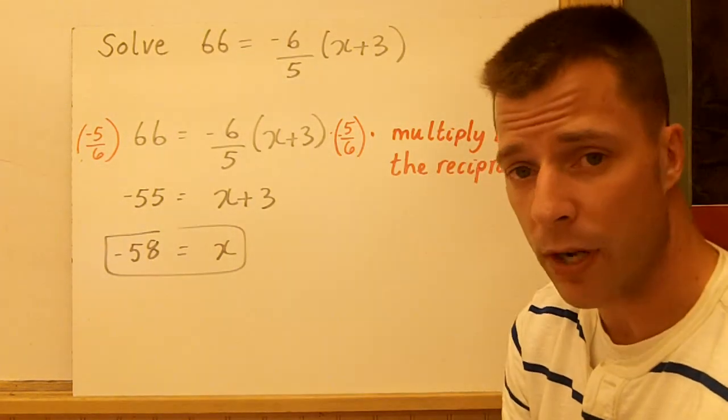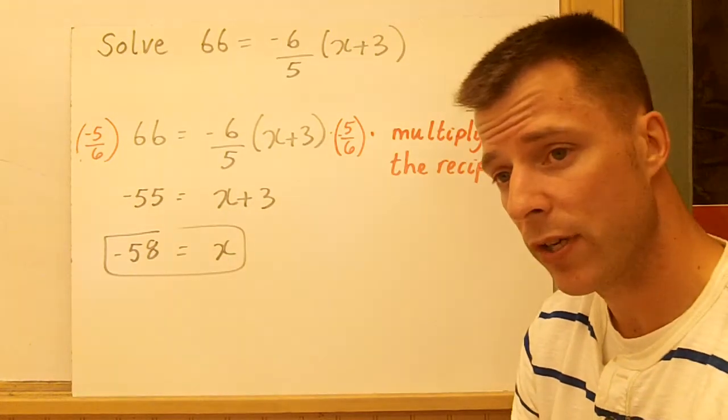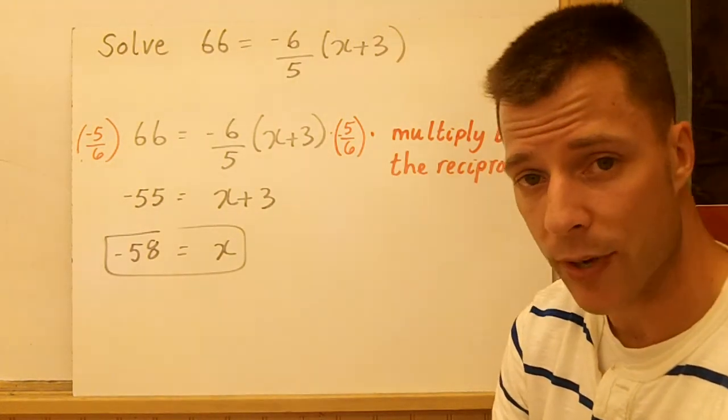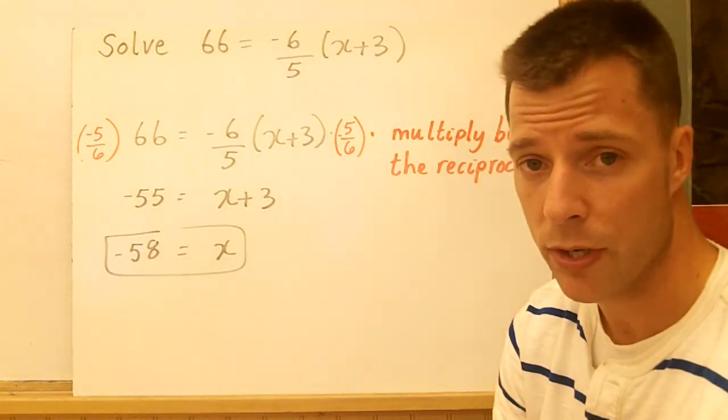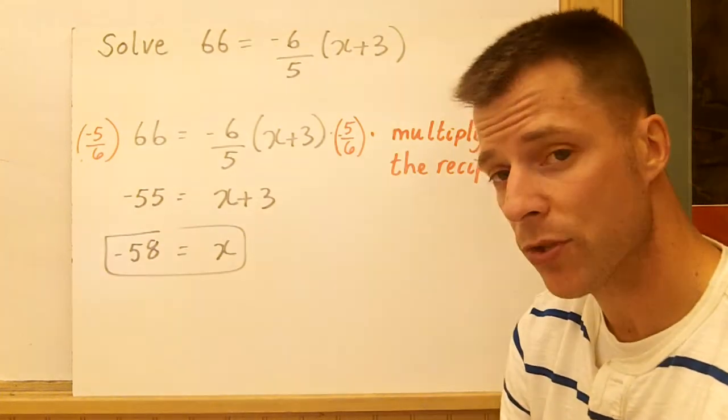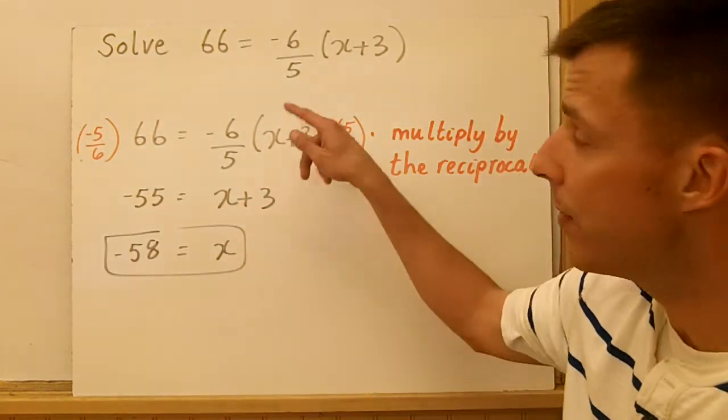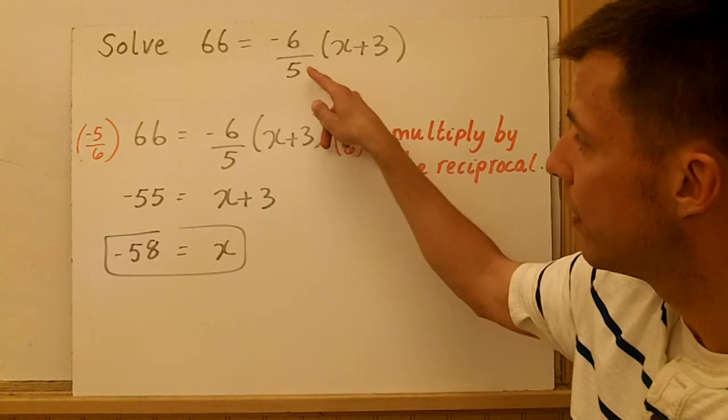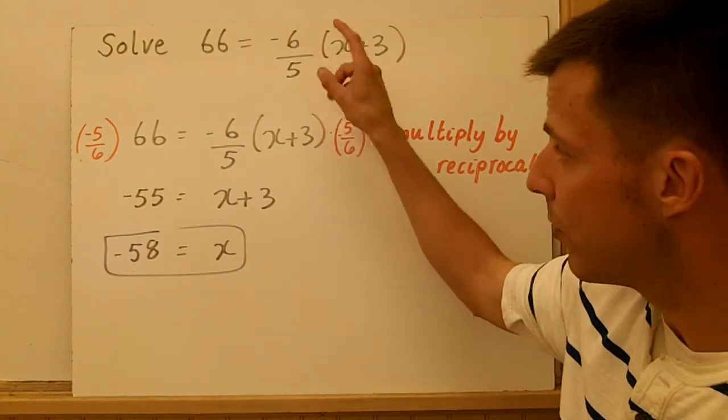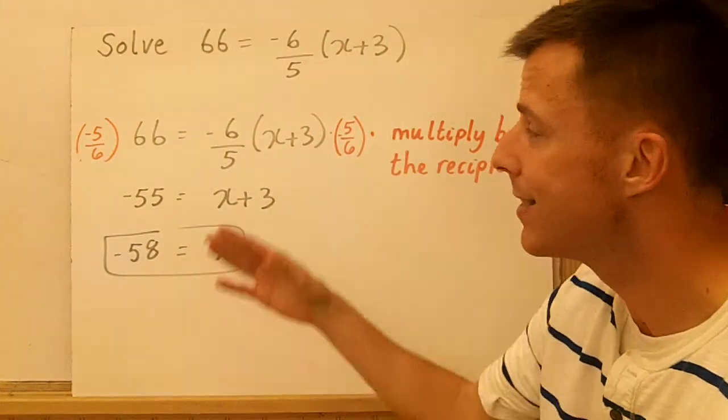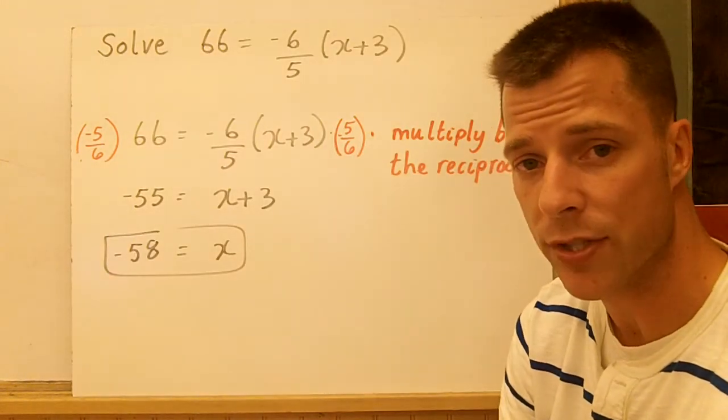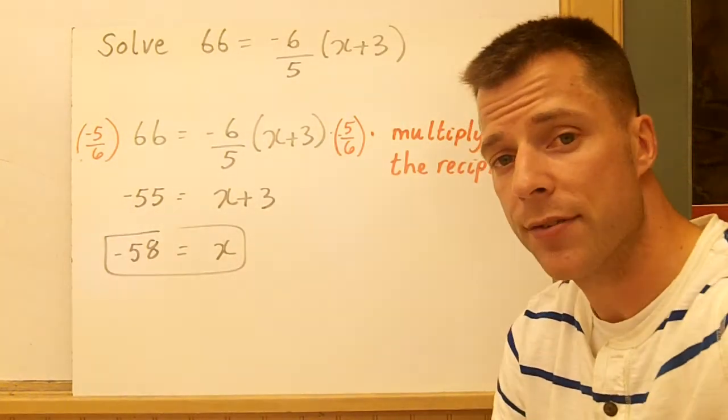So these are multi-step equations. Just to review, you have more than one operation here, at least two. Most of the time you're going to add or subtract last, except if you distribute and there's no other term, like in this last example. We got rid of the fraction first because it's not beneficial to distribute too many fractions. We'll see you for the next video. Thank you.